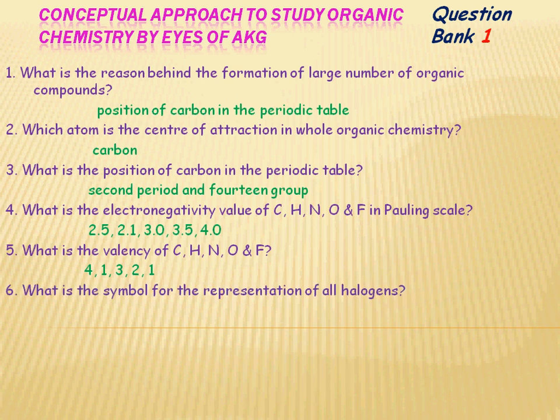What is the symbol for the representation of all halogens? The symbol is X. X is the general symbol given to all halogens, whether it is fluorine, chlorine, bromine, or iodine.